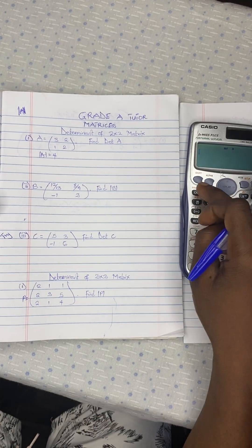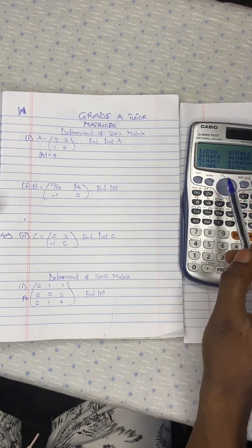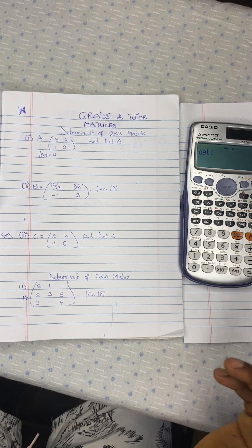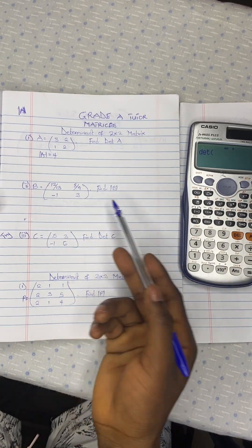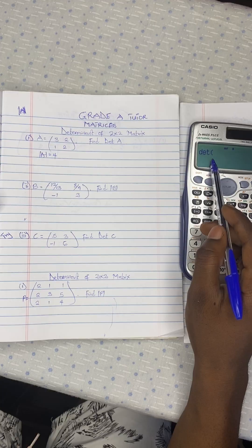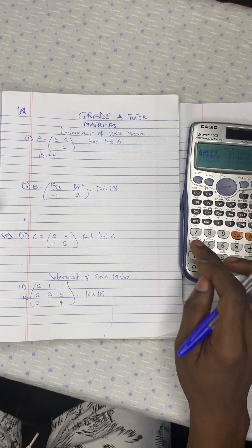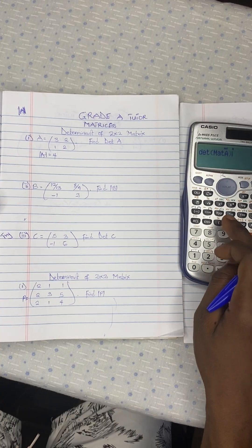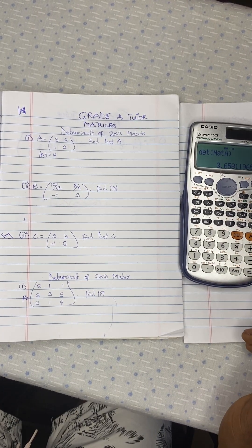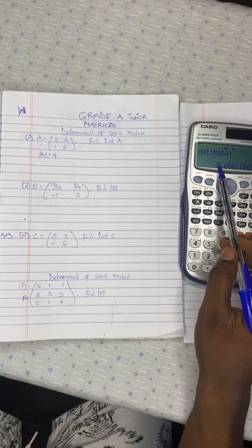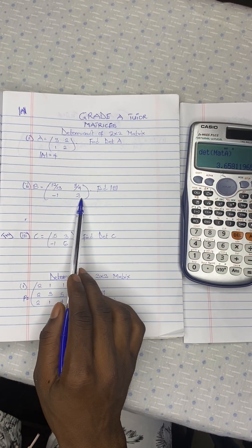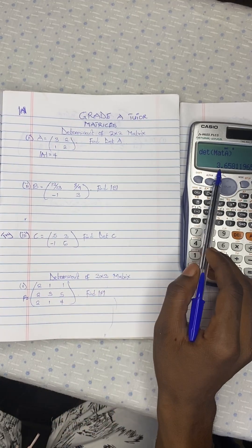And what do you do? You come to the menu. Shift 4. And that is where you see the determinant. So you pick 7. Now, the determinant of what? So you have to go and bring that particular matrix here. So shift 4. It is here. So we pick this one. Then we close it. That is it. So when we calculate for the determinant, this is what we are going to get.